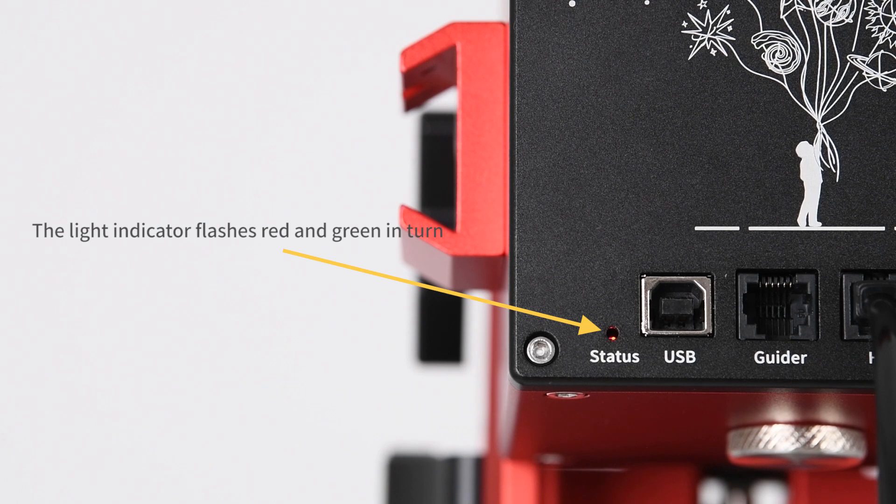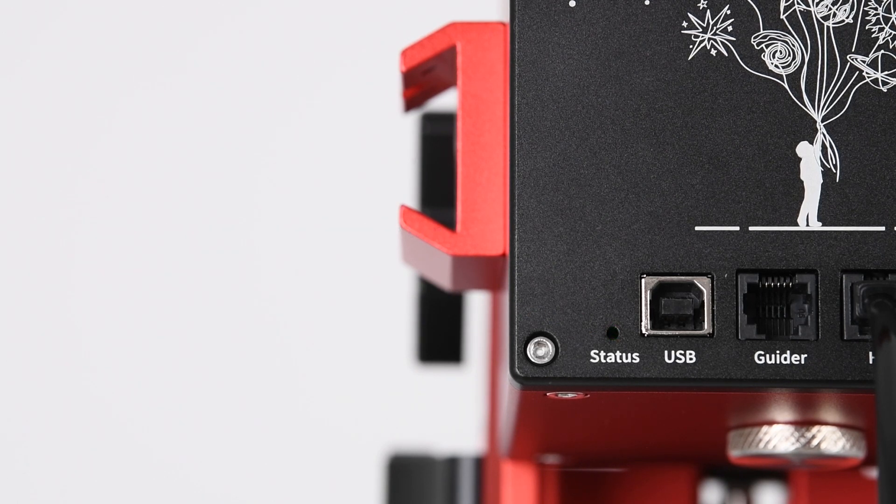The light indicator will flash red and green after the first five seconds if the local time coordinate information has not been synchronized. Unsynchronized mounts are unable to go to targets, nor will certain other features of the AM5 be available for use.